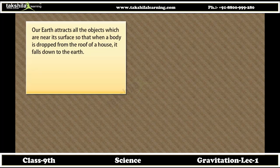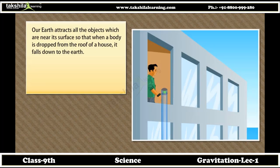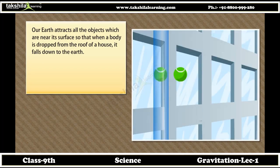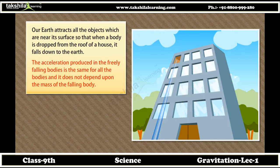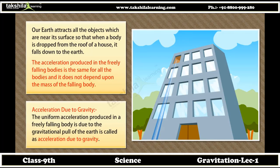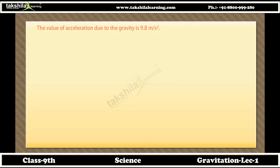The earth attracts all objects near its surface, so when a body is dropped from the roof of a house it falls down to the earth. The acceleration produced in freely falling bodies is the same for all bodies and does not depend upon the mass of the falling body. Acceleration due to gravity: the uniform acceleration produced in a freely falling body due to the gravitational pull of the earth is called acceleration due to gravity.